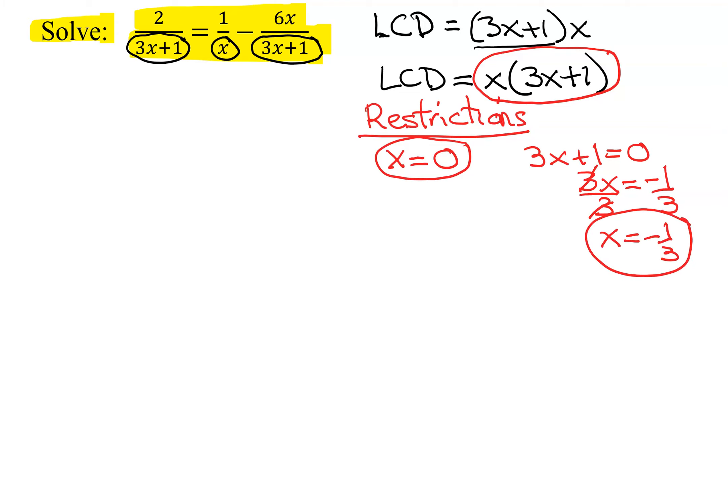So those are the two numbers that can't be part of the answer because they would make at least one of our denominators equal to 0. x equals 0 makes this one equal to 0. x equals negative 1 third makes both of these denominators equal to 0.